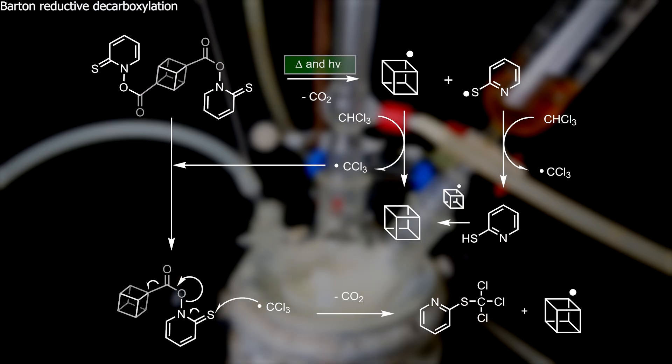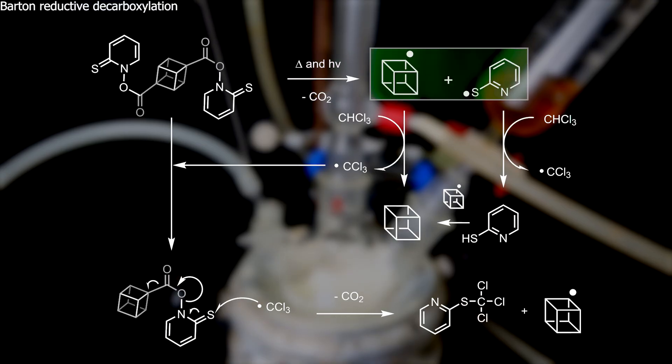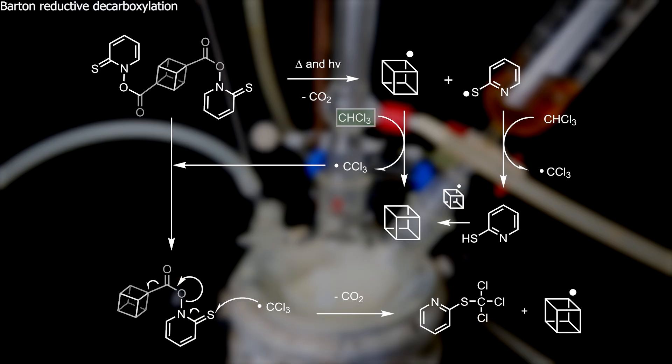Under irradiation from light, the molecule decarboxylates and releases CO2, while also forming two radicals: the cubane radical and the mercaptopyridine radical. Chloroform is a suitable hydrogen donor from which these radicals can steal a hydrogen from. The cubane radical will form cubane after taking up a hydrogen, while the mercaptopyridine radical can also take up a hydrogen, which can later serve as a hydrogen donor as well.